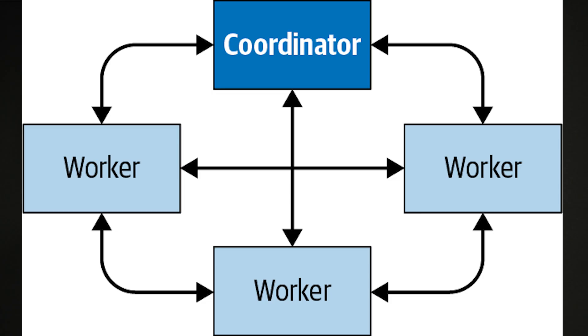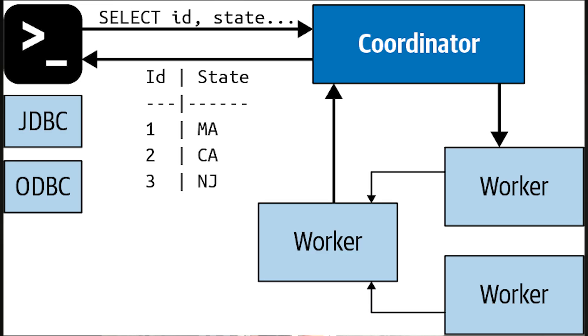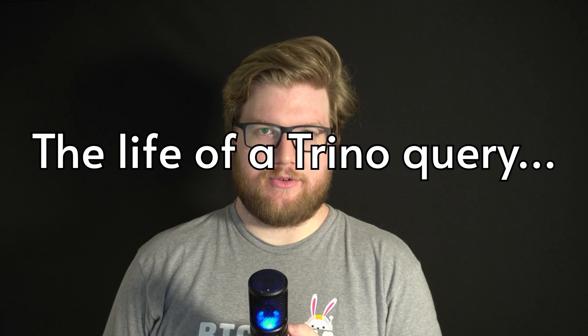This means that you can add more nodes and servers to your Trino cluster to gain more processing power. The coordinator is the boss server in a Trino cluster. There's only one coordinator node in each Trino deployment. It handles incoming queries, then delegates work to the many worker nodes. We'll focus on what the coordinator does the instant a query is submitted, and then we'll travel through the life of a Trino query.